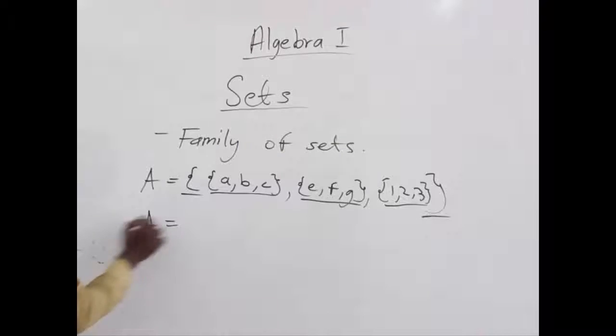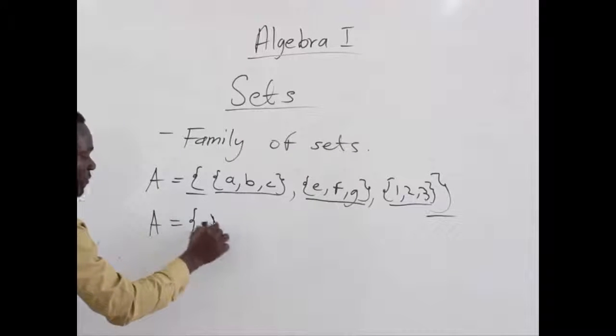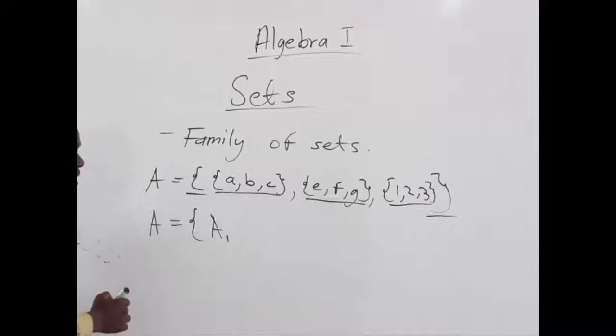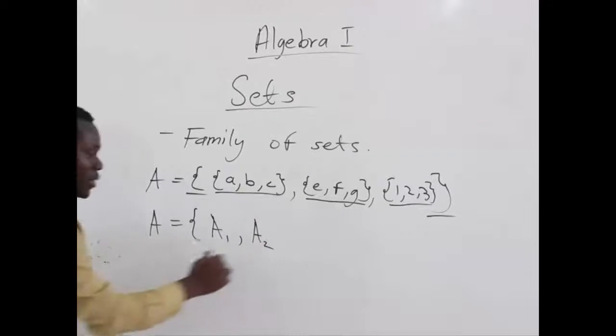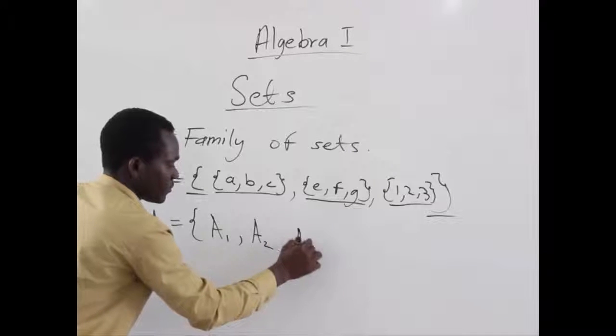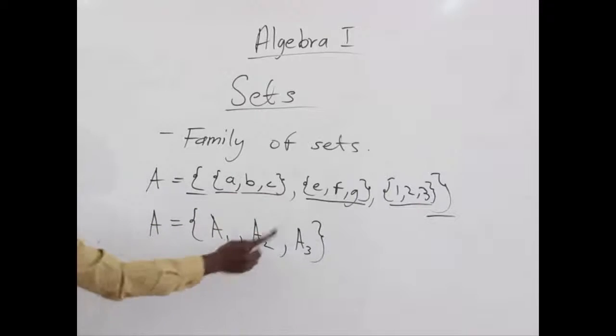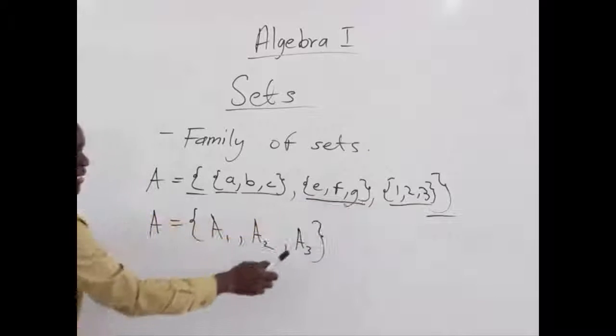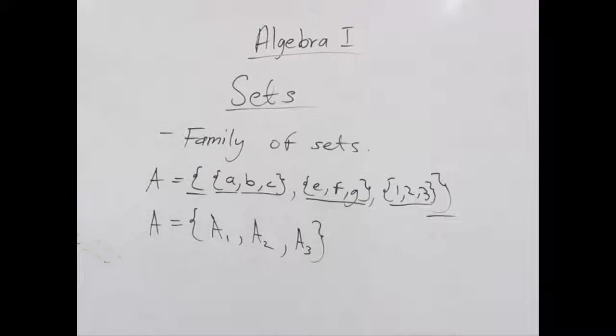So, we can represent each smaller set with a subscript of A. For example, we say the family of sets A is equal to the members of the sets A1, A2, and A3. Where A1 will correspond to this smaller set, A2 also corresponds to this smaller set, A3 also corresponds to that third smaller set. So, this is all about family of sets.